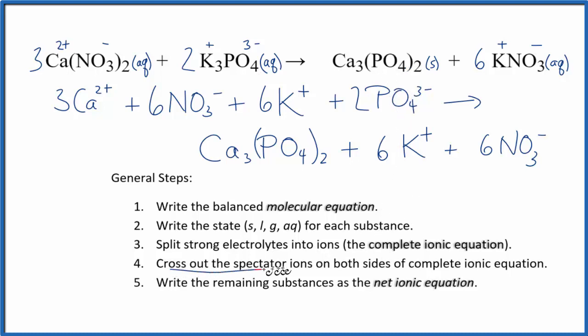Now we'll cross out what are called spectator ions. They're on both sides of this complete ionic equation. So these are things that haven't changed. And since they haven't changed, we're really not interested in them. We'll just get rid of them.